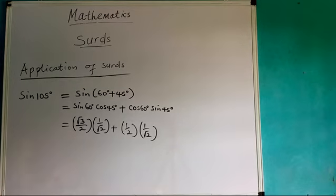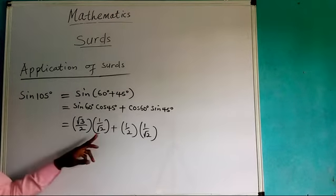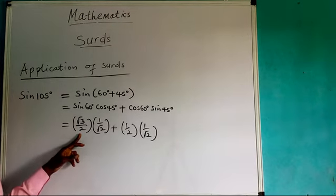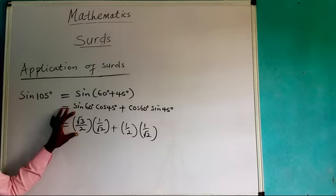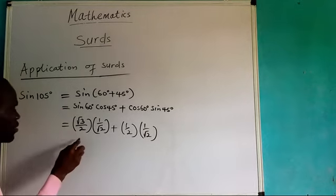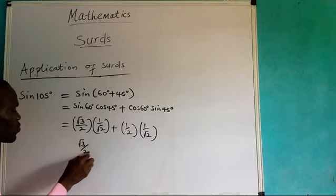Looking at the fractions, we have here, there is no surd at the denominator. We have surds here. Therefore, I need to rationalize this one. I will leave this one, root 3 over 2. I will repeat here, root 3 over 2. While for this one I will rationalize, I will have root 2 over 2.